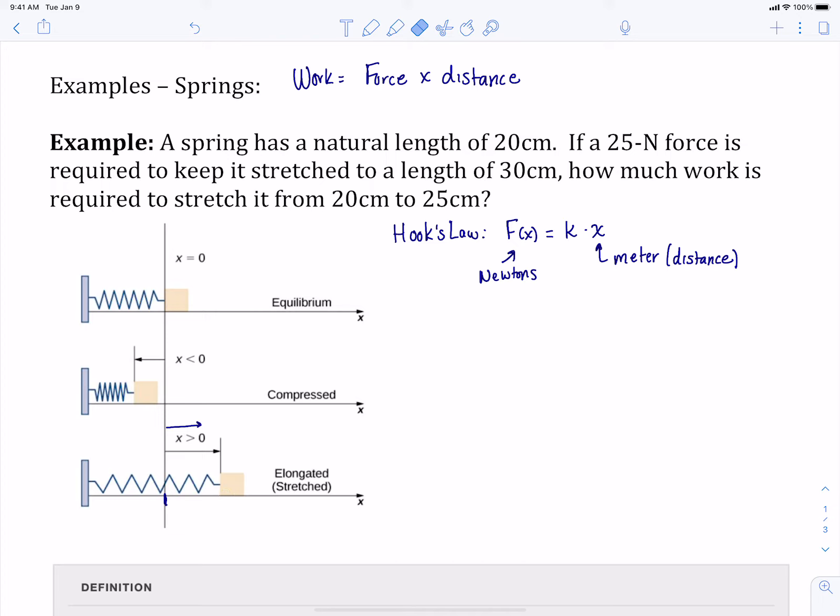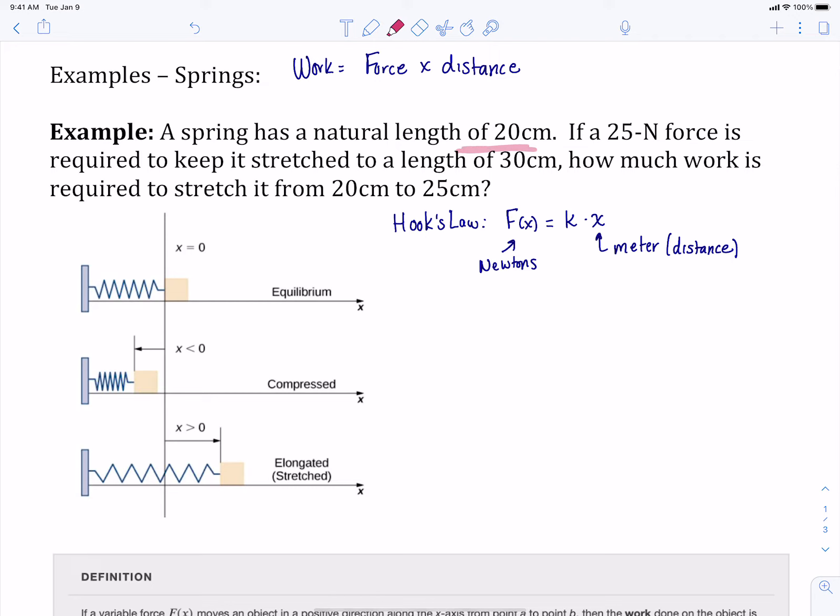In our example here, we want to take a spring that's got a natural length of 20 centimeters. That means with our picture that our zero right here is sitting at 20 centimeters. Here we are at zero. It tells us that it takes 25 Newtons of force to stretch it to 30. So if we pull this right here, this is 30 meters, or 10 meters from our start, because we started sitting here at 20.